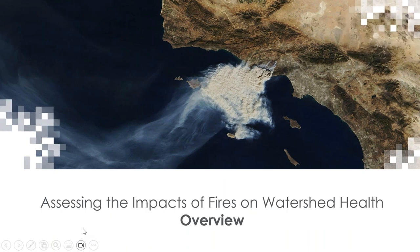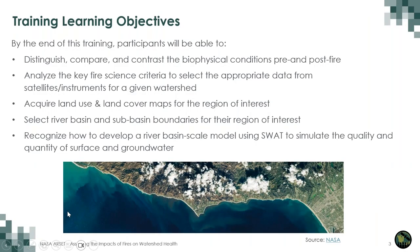As an overview, I'd like to take a moment to provide a recap of the learning objectives set forth for the training series. By the end of this training, participants will be able to distinguish, compare and contrast the biophysical conditions pre and post-fire. You'll be able to analyze the key fire science criteria to select appropriate data from satellites and instruments for a given watershed. You'll acquire land use and land cover maps for a region of interest, select river basin and sub-basin boundaries for a watershed of interest, and recognize how to develop a river basin scale model using SWAT to simulate the quality and quantity of surface and groundwater.